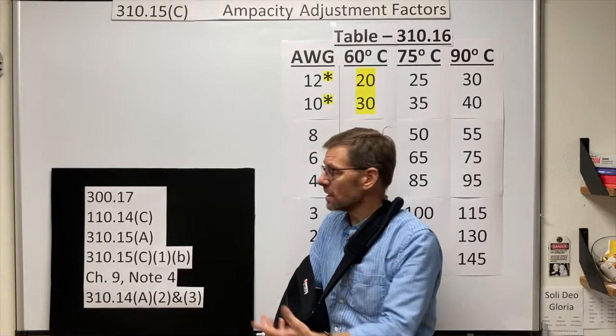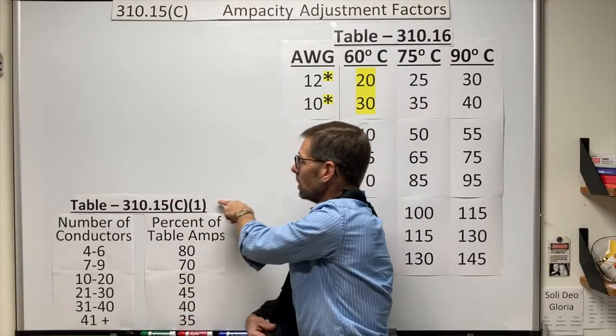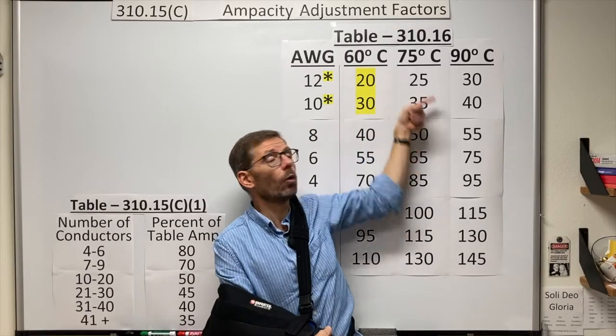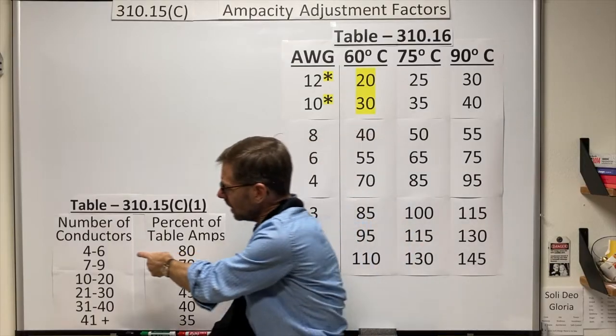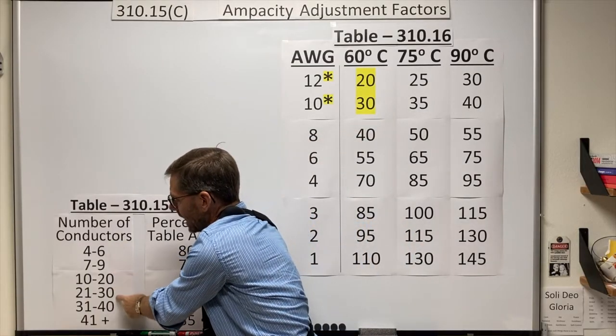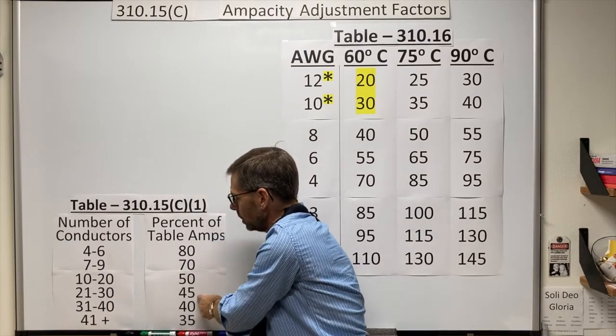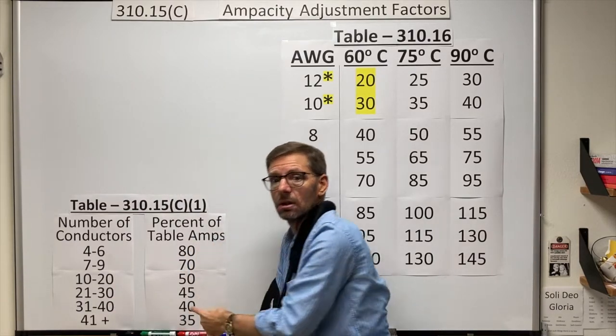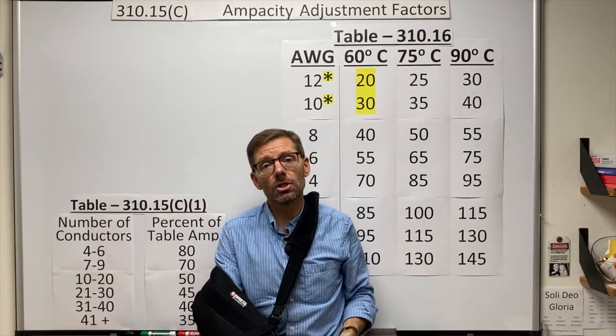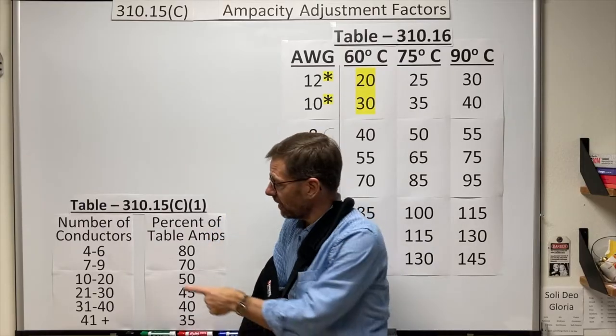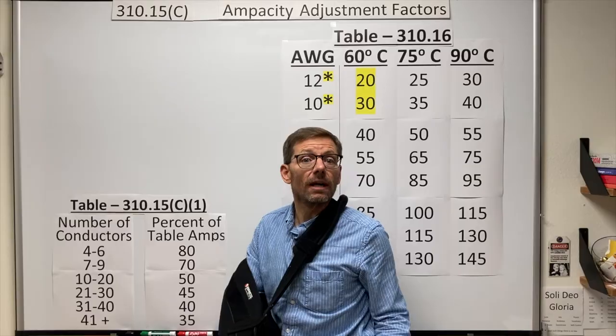So the basic process deals with my ampacity tables and also this table that you'll find a page or two before these tables. As we can tell, the more conductors we have, current carrying conductors, the more we have, the lower the percentage of my original ampacity that I'm allowed to use. So the first step is to find out how many current carrying conductors I'm dealing with.